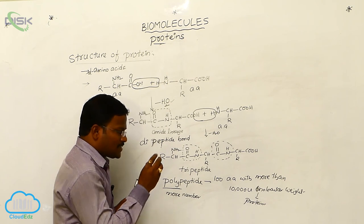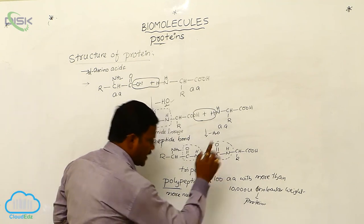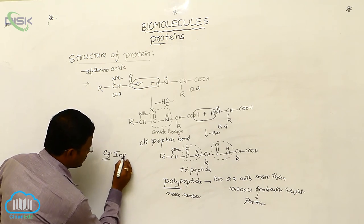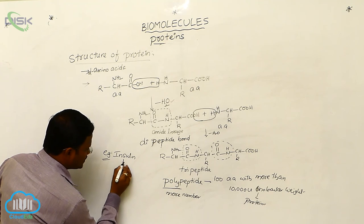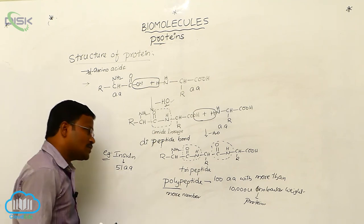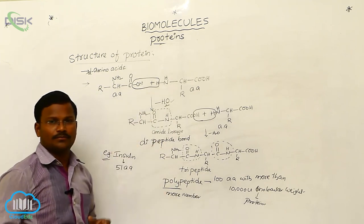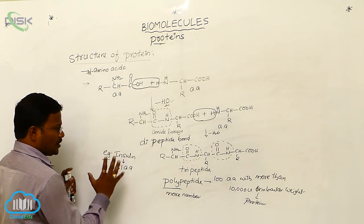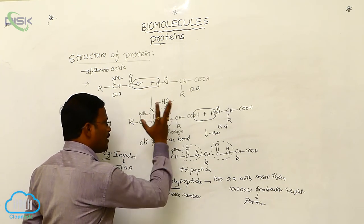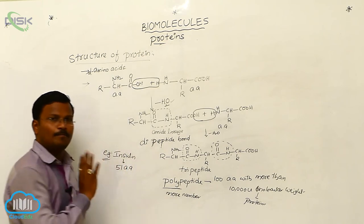In some cases, polypeptides with fewer amino acids are also considered proteins. For example, insulin is a protein made up of only 51 amino acids. So this polypeptide is also called a protein. This is the complete overview of peptide bond formation between amino acids, and how polypeptides and proteins are defined.